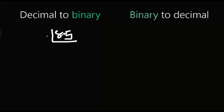I'm going to show you a decimal number — case 10 is binary. I'm going to show you a decimal number.